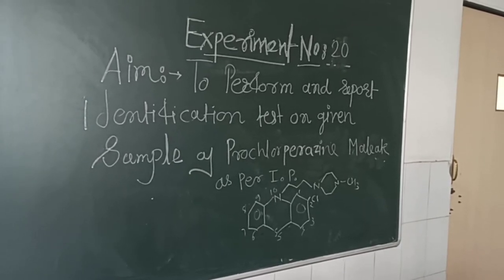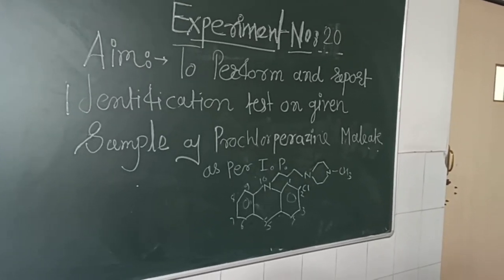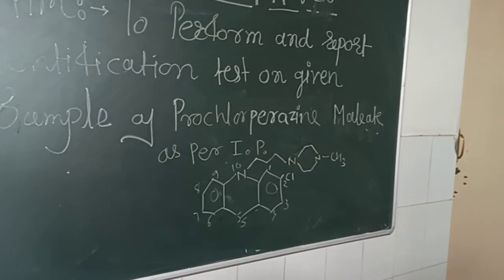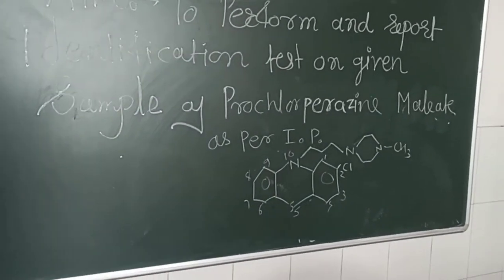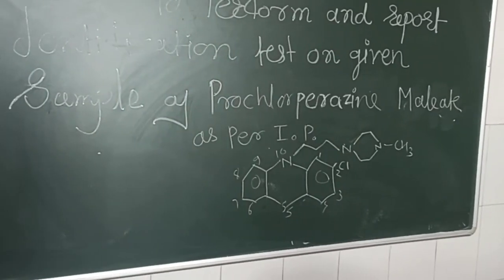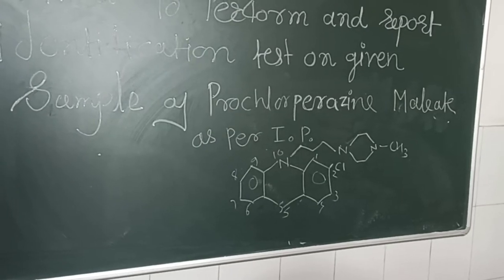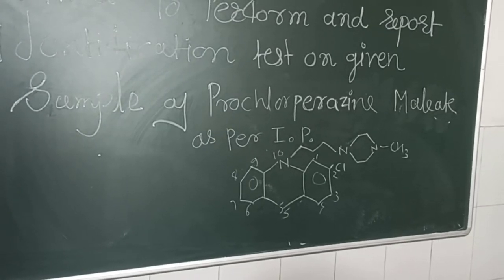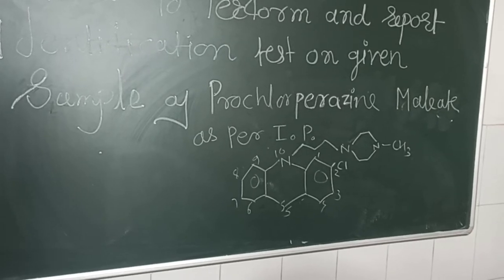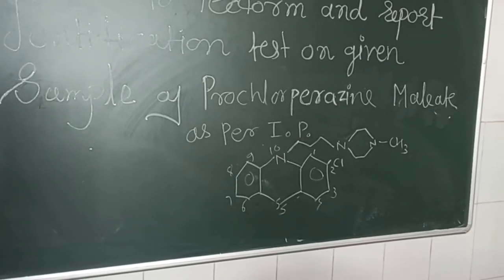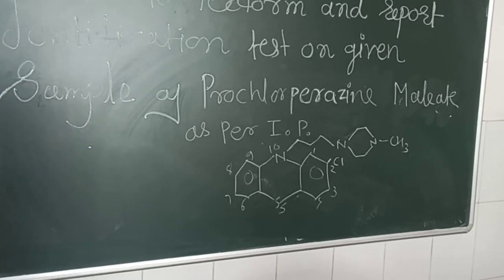Here the structure is given. The parent for this structure is phenothiazine. On the 10th position of phenothiazine, the substitution is 3 dash in bracket 4-methyl piperazine 1-yl, and it is based on the chain that is propyl. At the 2nd position, chloro substitution is there.